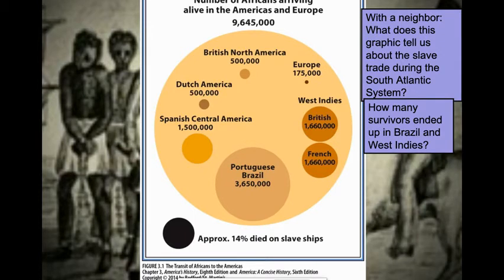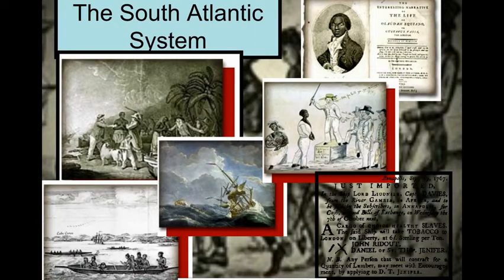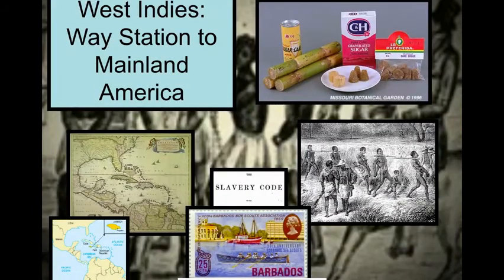The South Atlantic system involved picking up enslaved people from West Africa, bringing them over to the Caribbean — Barbados — to the sugar plantations as a way station. They'd sell off a first batch there and then move up the coast of the Americas doing more sales. During this time, slave codes were established in the different Caribbean colonies and American colonies in order to control the slave population as they were coming in.